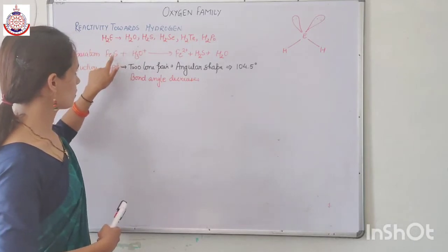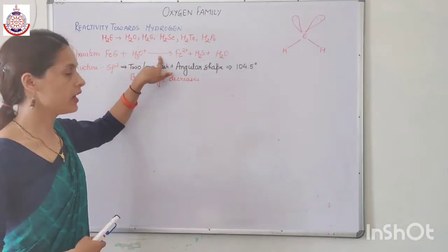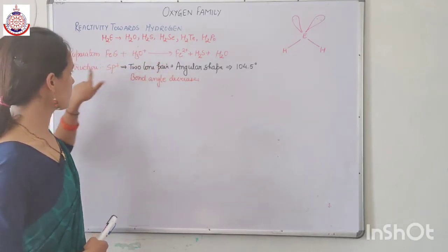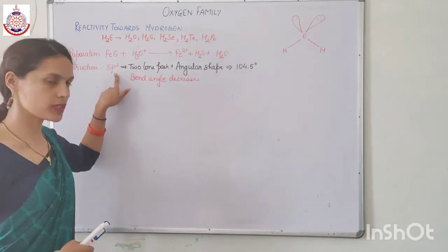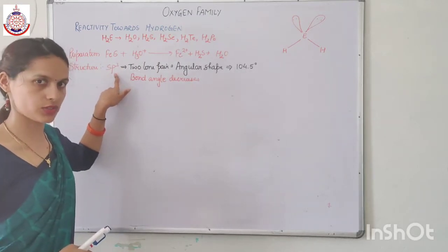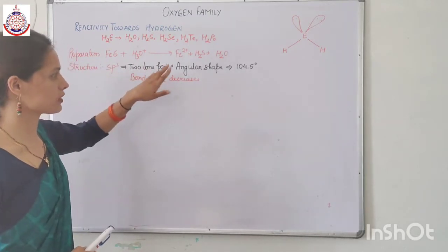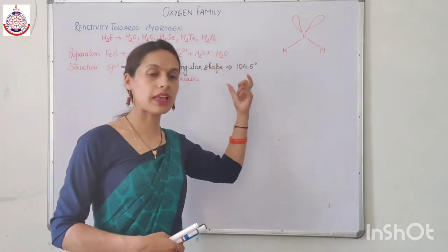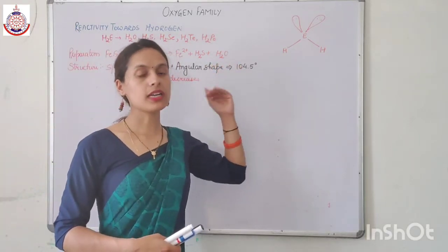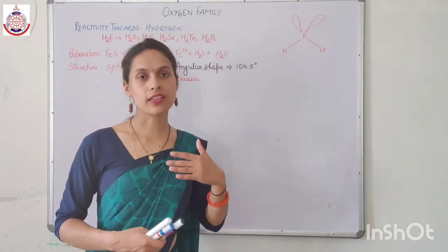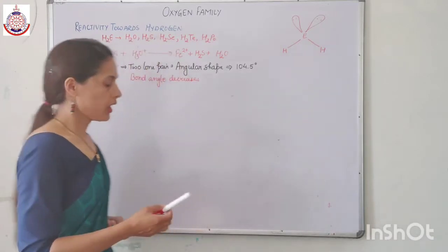So, to summarize the structure: the hybridization is SP3, and because of the presence of two lone pairs the shape is angular. Bond angle decreases as we move down the group due to decreasing bond pair–bond pair repulsion.